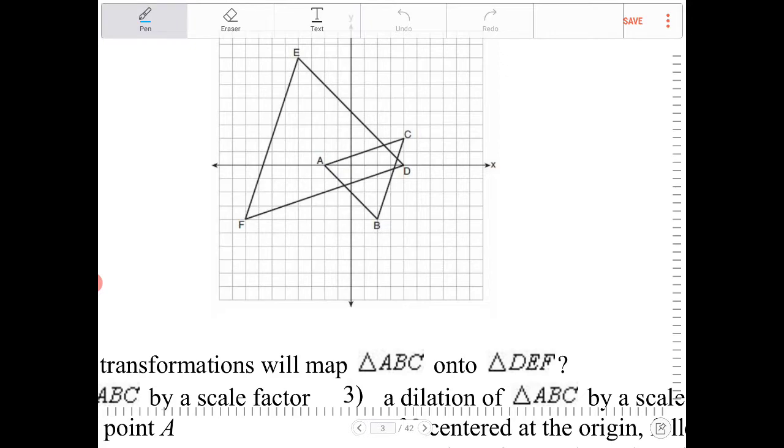So the orientation of ABC definitely has changed. So there definitely should be some kind of a rotation involved. And after a rotation, there should be some kind of a dilation.